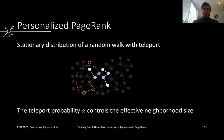From the definition, we can see that the teleport probability alpha controls the amount of information we are incorporating from the neighborhood of a node. Namely, for values of alpha close to 1, the random walk teleports to the node more often and we therefore place more importance on the immediate neighborhood of the node. As the value of alpha decreases to 0, we instead give more importance to the extended neighborhood of the node.